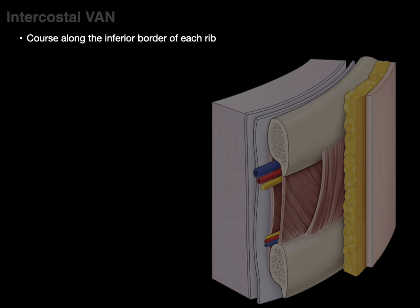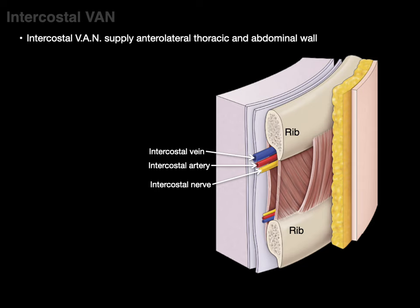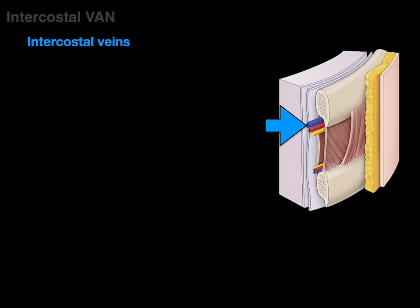The intercostal VAN courses along the inferior border of each rib — or equivalently, along the top of the intercostal space. This is important clinically: when performing thoracentesis between the ribs, you must avoid hitting the vein, artery, and nerve at the top of the intercostal space. The intercostal VAN supplies the anterolateral thoracic and abdominal wall.